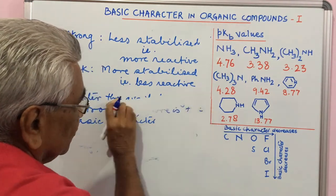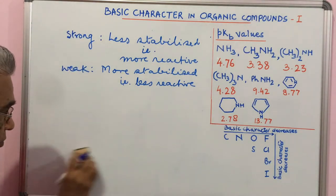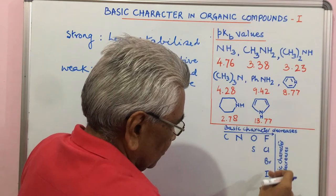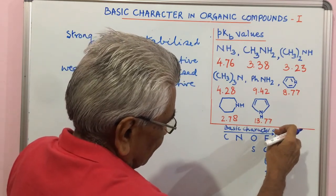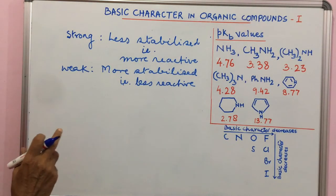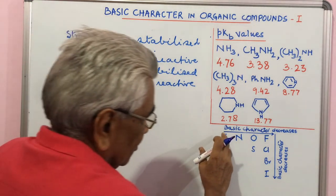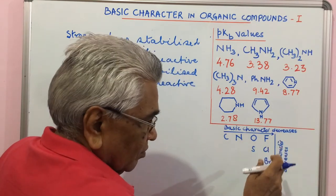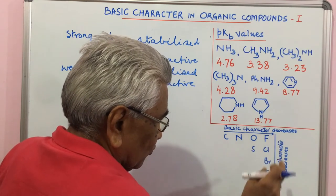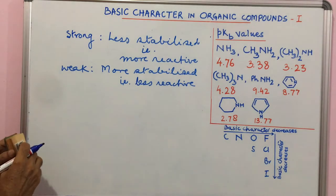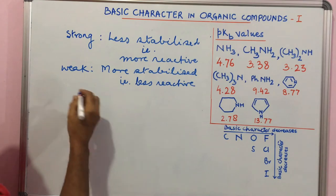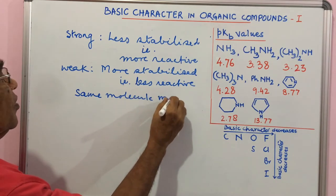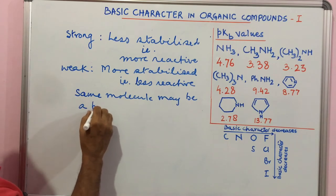You have to also take care of this chart when you decide basic character. In going from carbon to fluorine in this period, basicity decreases, and from fluorine to iodine in this group, basicity decreases. If you remember nucleophiles, here nucleophilic character decreases and here increases. F- was less nucleophilic than I-.